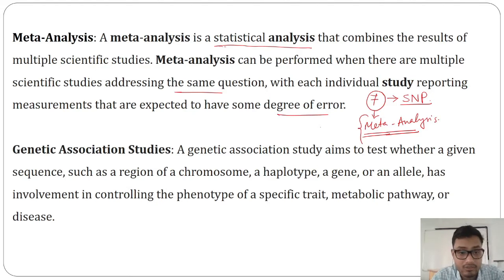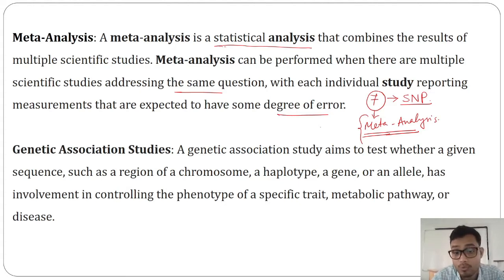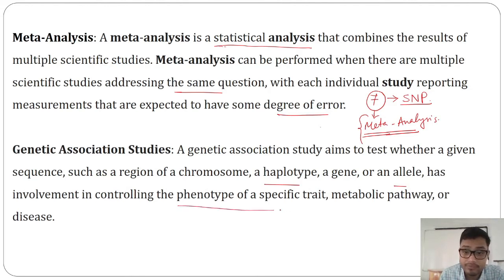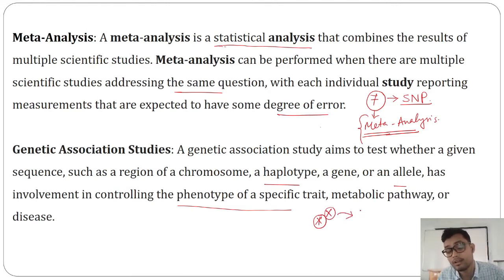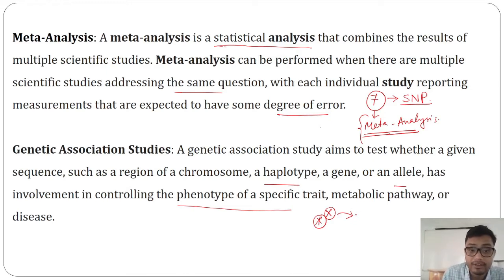So what is a genetic association study? A genetic association study aims to test whether a given sequence — such as a region of the chromosome, haplotype, or gene allele — has involvement in contributing to the phenotype of a specific trait, such as a metabolic pathway or disease. For a particular disease, it is controlled by several factors, chromosomes, or locations of a particular chromosome. This is basically called a genetic association study.